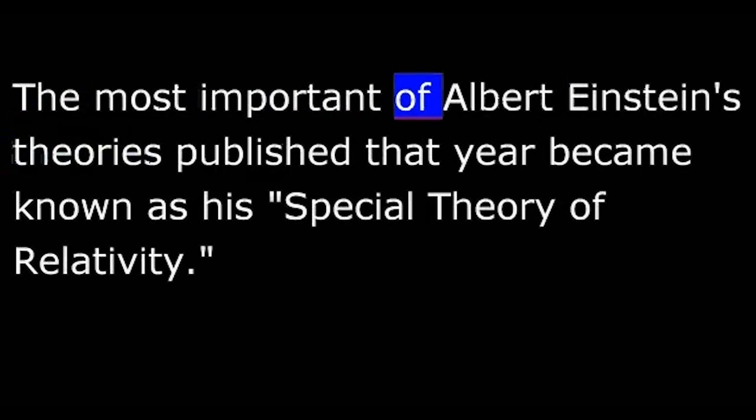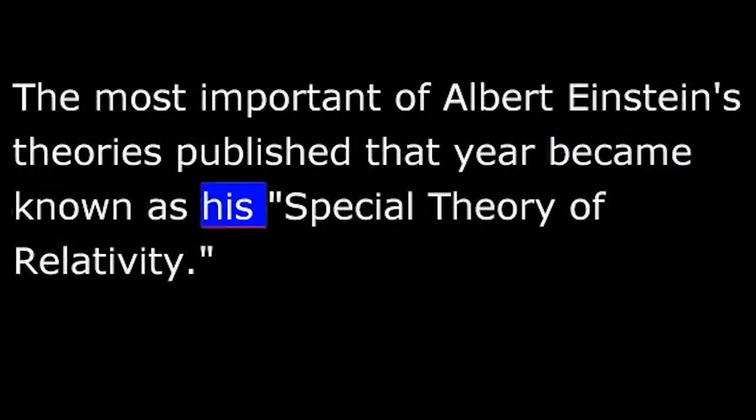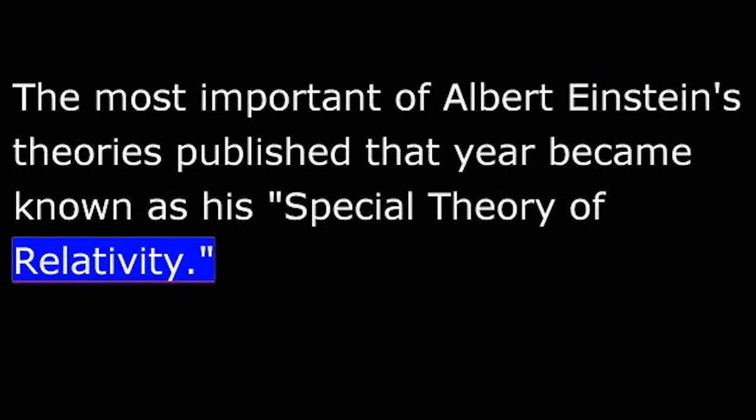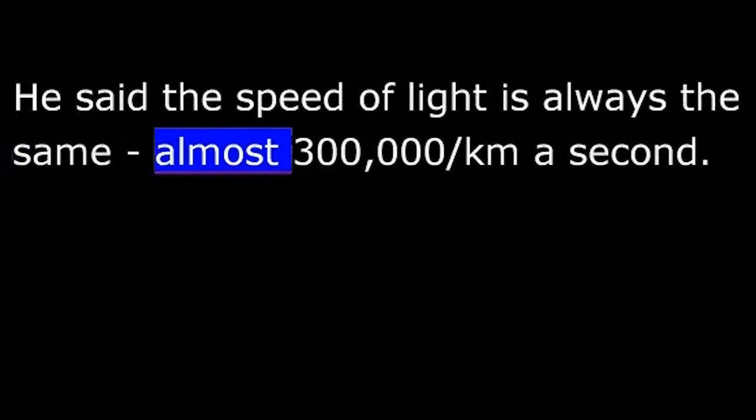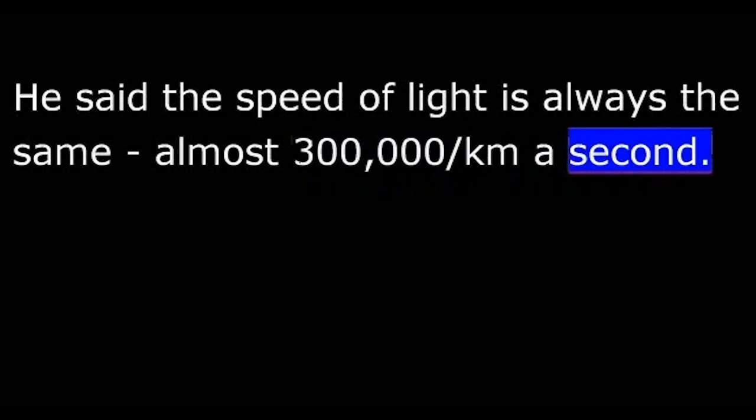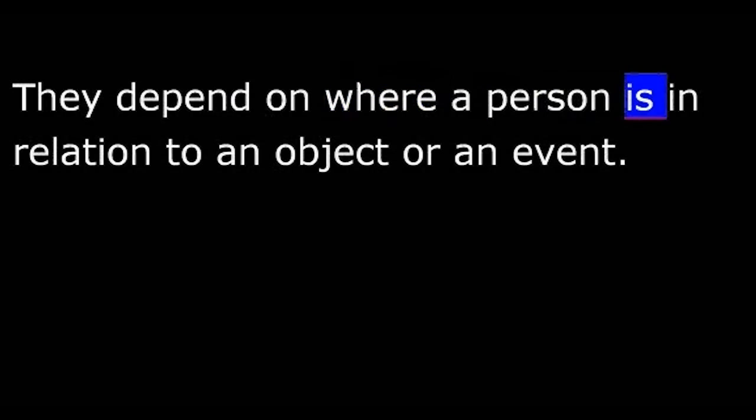The most important of Albert Einstein's theories published that year became known as his special theory of relativity. He said the speed of light is always the same, almost 300,000 kilometers a second. Where the light is coming from, or who is measuring it, does not change the speed. However, he said, time can change, and mass can change, and length can change. They depend on where a person is in relation to an object or an event.